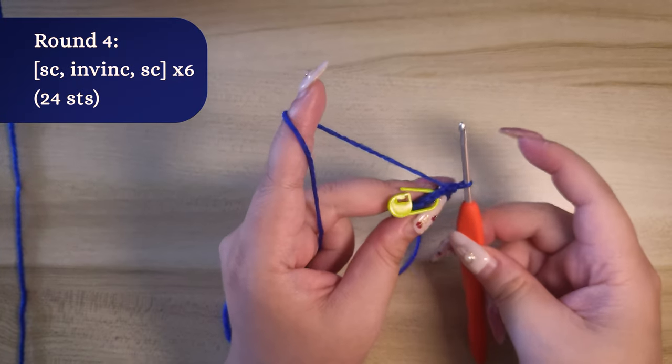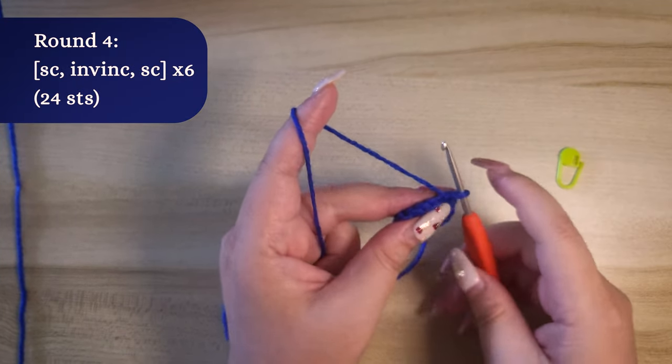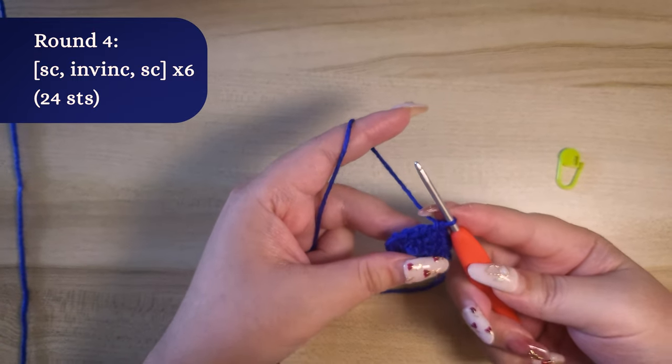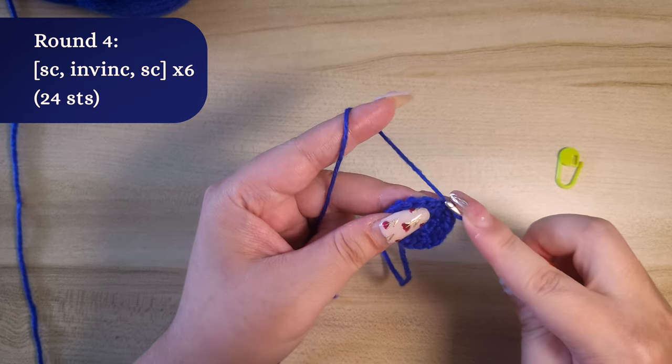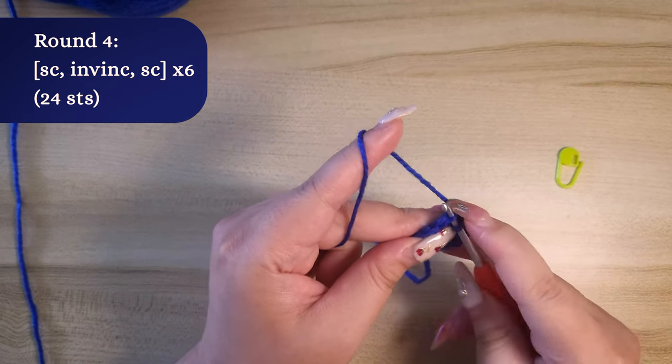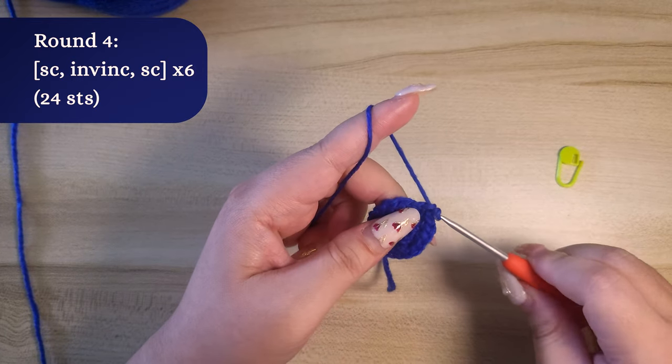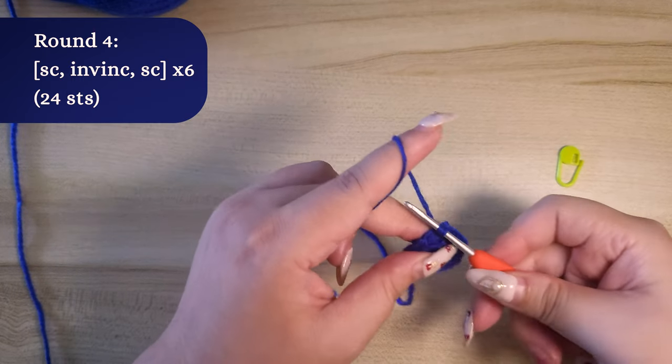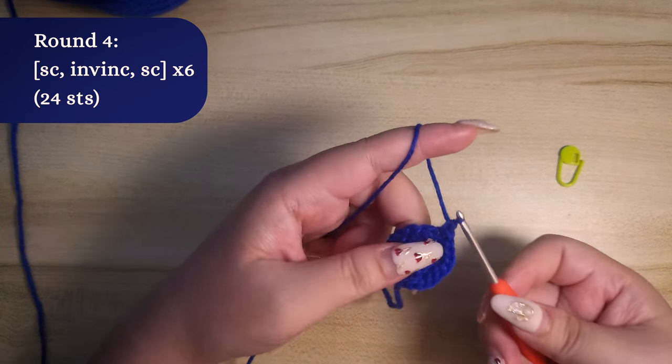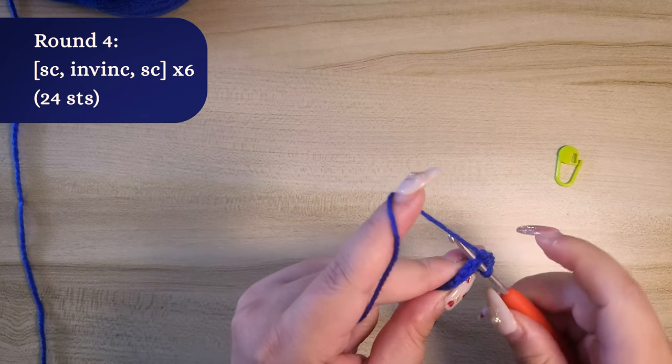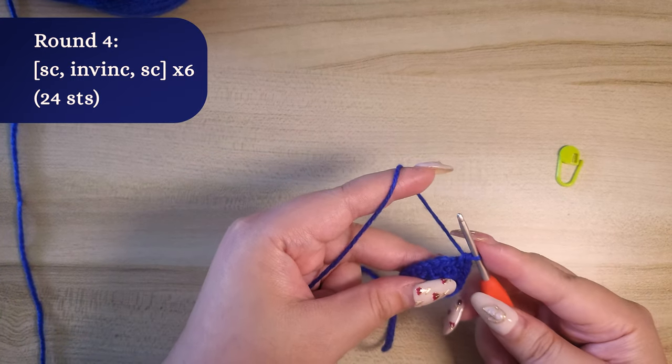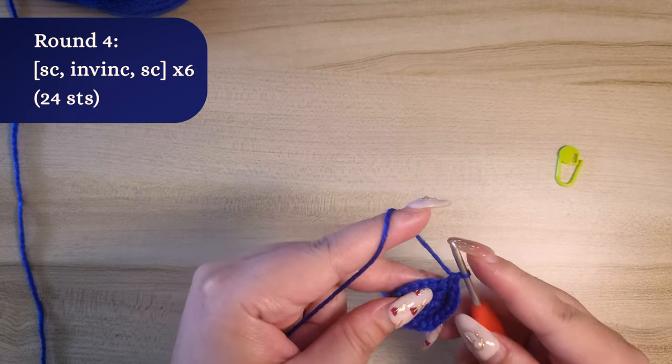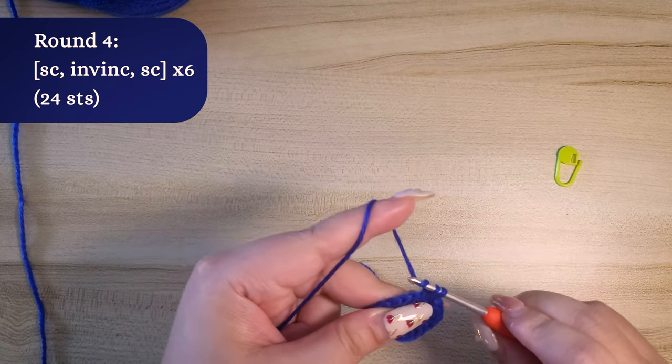Round 4, single crochet, invisible increase, and single crochet. Repeat this pattern 6 times. Don't forget to use a stitch marker and mark the first stitch of the round. I actually forgot to mark mine, so let me go back and do that now.